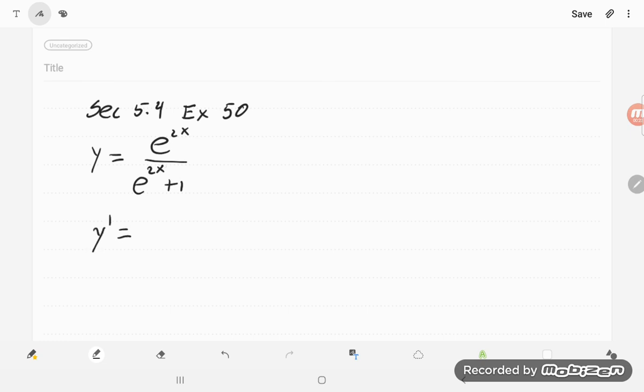So if I want to take this derivative, it looks like a quotient rule. So take the derivative of the top, which is e to the 2x times 2, multiply by the thing on the bottom, e to the 2x plus 1.